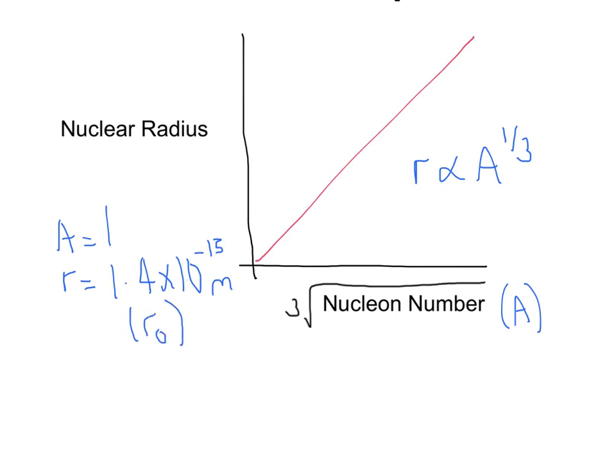So, we end up with a relationship of the form, radius is equal to R0, A to the one third, which is really nice, because if we know the number of nucleons, we can work out what the radius of the nucleus would be, which is a good progression on from where we were before.